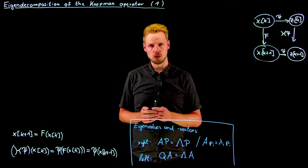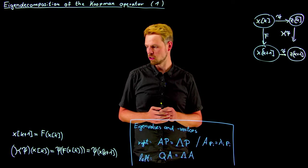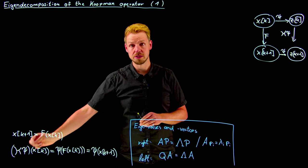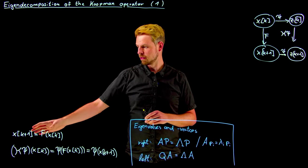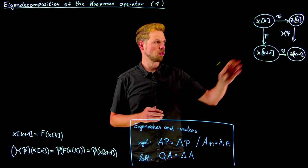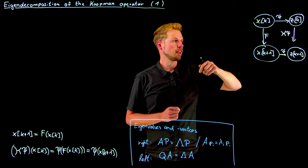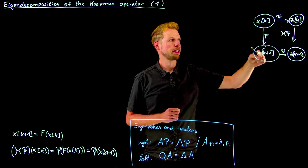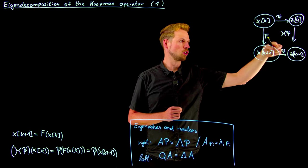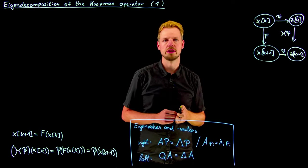The Koopman operator allows us to take a linear perspective, but we have to trade this for infinite dimensions. What we mean by this is that the Koopman operator acts on this observable function psi that maps the state x to an observed quantity z. So this can be seen in this diagram here, where we have a nonlinear system on the left side, where the flow map propagates the state. We have a linear system on the right-hand side, where the Koopman operator propagates forward in time this observable function, which means the Koopman operator acts on the function.